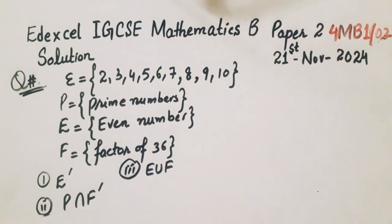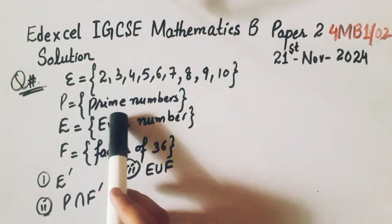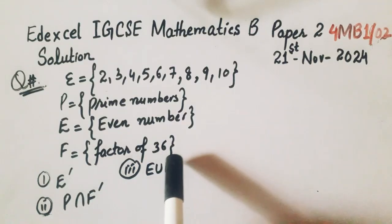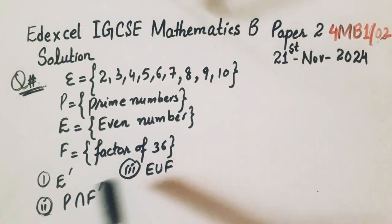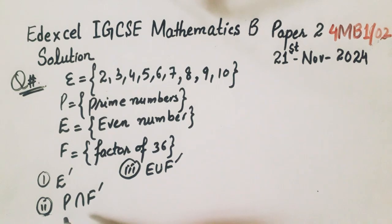Now we will solve question number 2. The next question is if the universal set is 2, 3, 4, 5, 6, 7, 8, 9, 10, then P is the set of prime numbers, E is the set of even numbers, and F is the factors of 36. Now you have to find E complement, union of E and F complement, and then union of E and F and P intersection F complement.